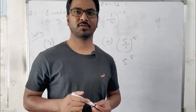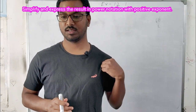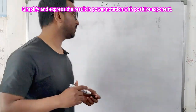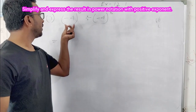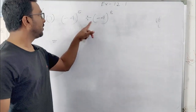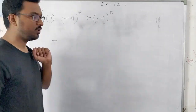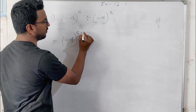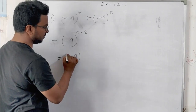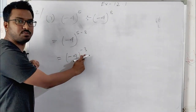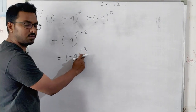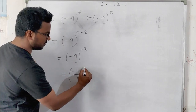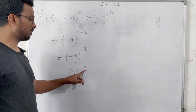Question 2: simplify and express the result in power notation with positive exponent. The first part has the same base, so we take the base as common. Since it is divided, we subtract the exponent: 5 minus 8 equals minus 3. The exponent is negative, so we take the reciprocal. We keep the minus in the numerator, giving minus 1 by 4 to the power 3.